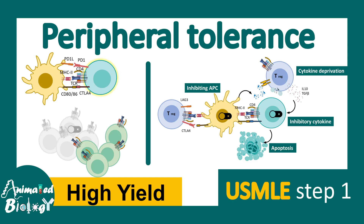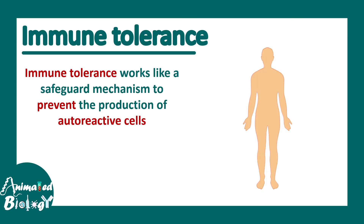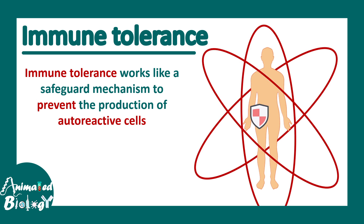In this video we'll talk about peripheral tolerance. This is a high-yield topic for USMLE part 1. Imagine the situation when your immune cell attacks your own body instead of protecting it — this kind of scenario leads to autoimmune disorder. Thanks to our tolerance mechanism, immune tolerance works like a safeguard to prevent auto-reactive cells and protect our body. But sometimes this tolerance mechanism also goes wrong in autoimmune disorders, which is why understanding these mechanisms is crucial.